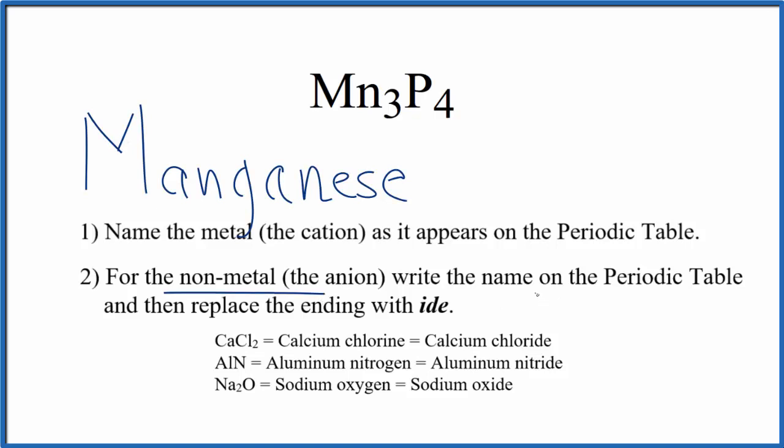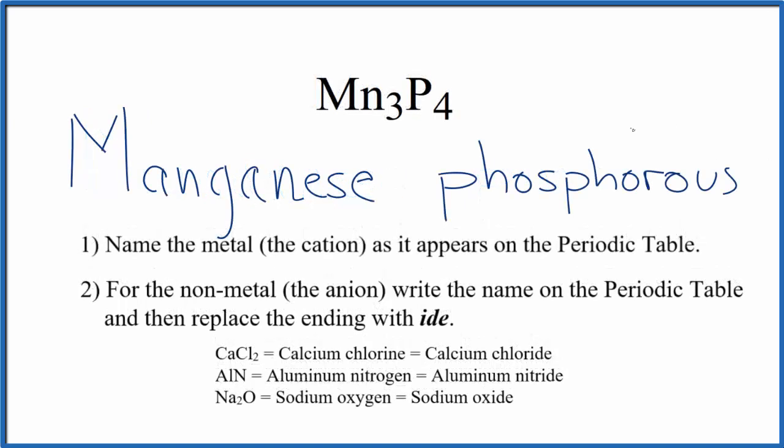Then we write the name for the non-metal as it appears on the periodic table. Lowercase P for phosphorus. And then we replace the ending, this O-R-O-U-S, with I-D-E.